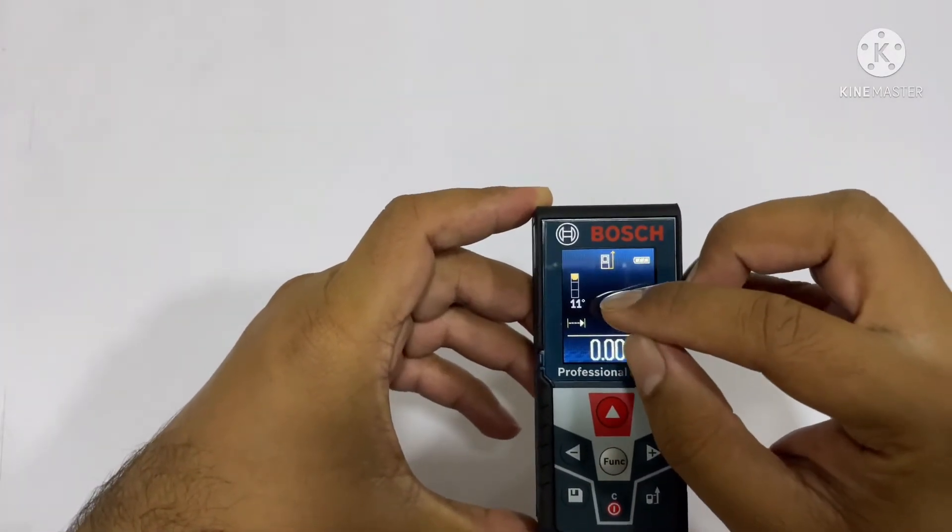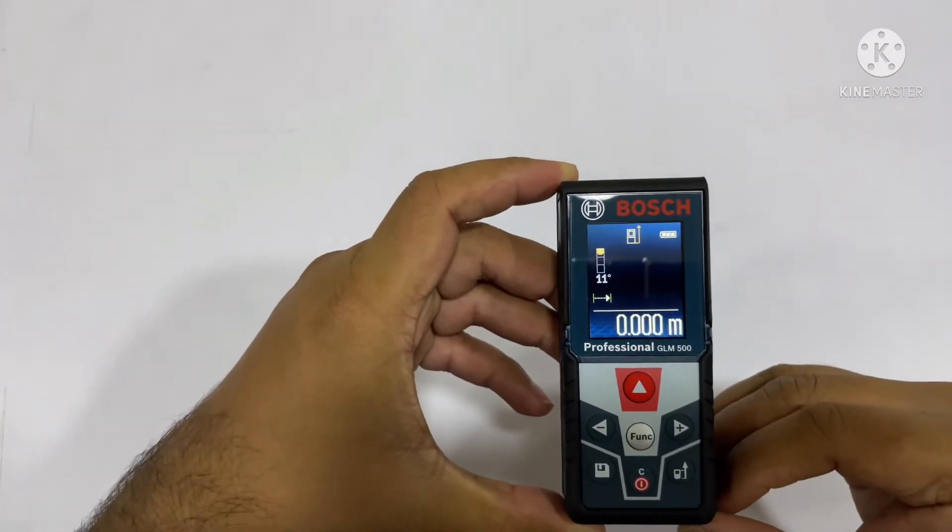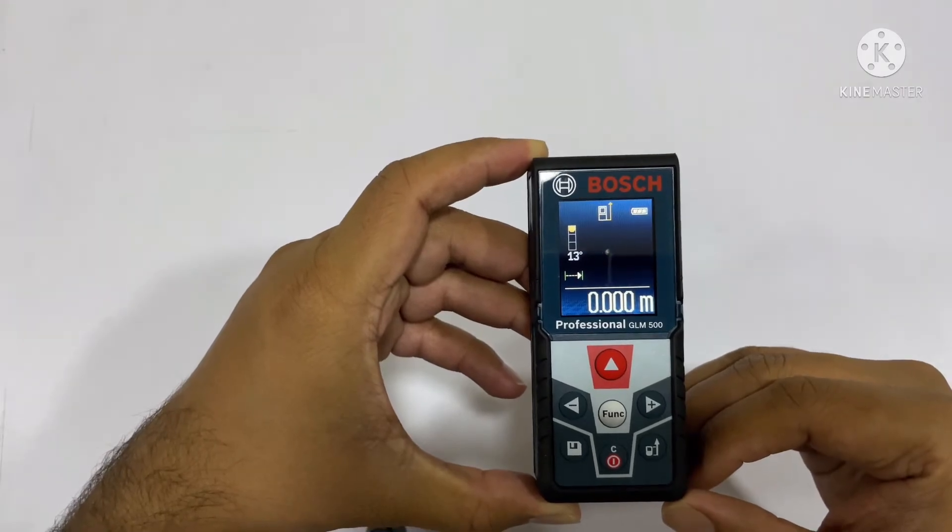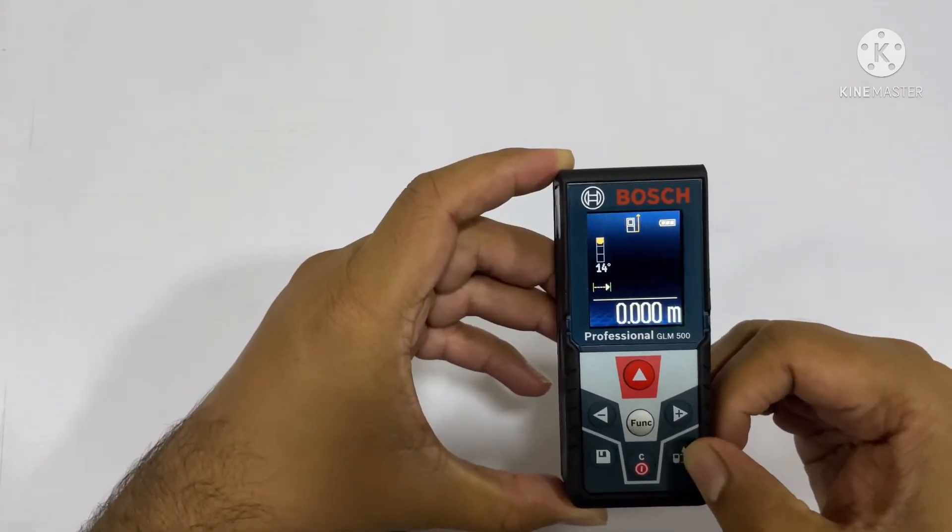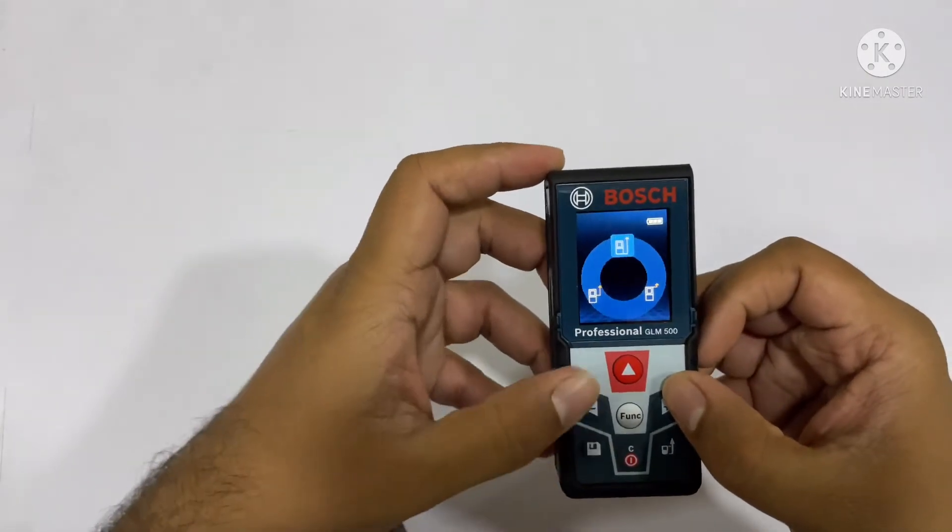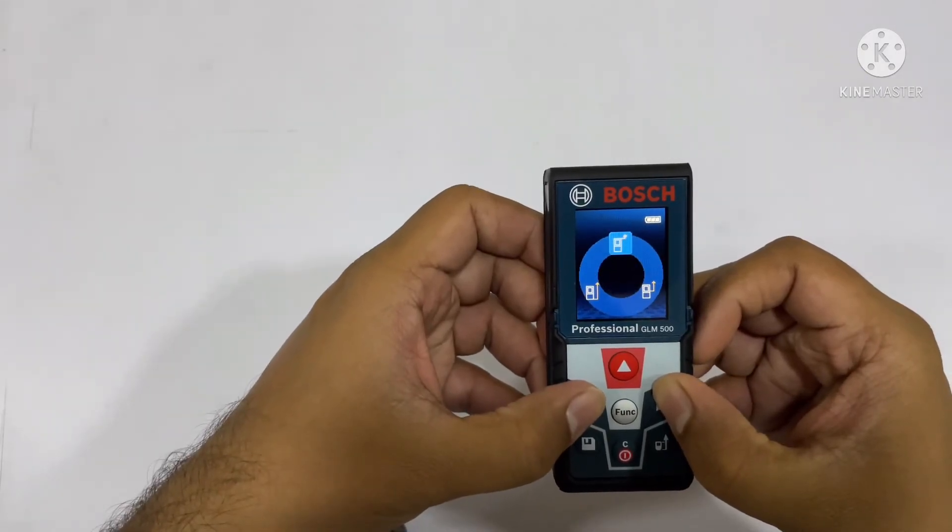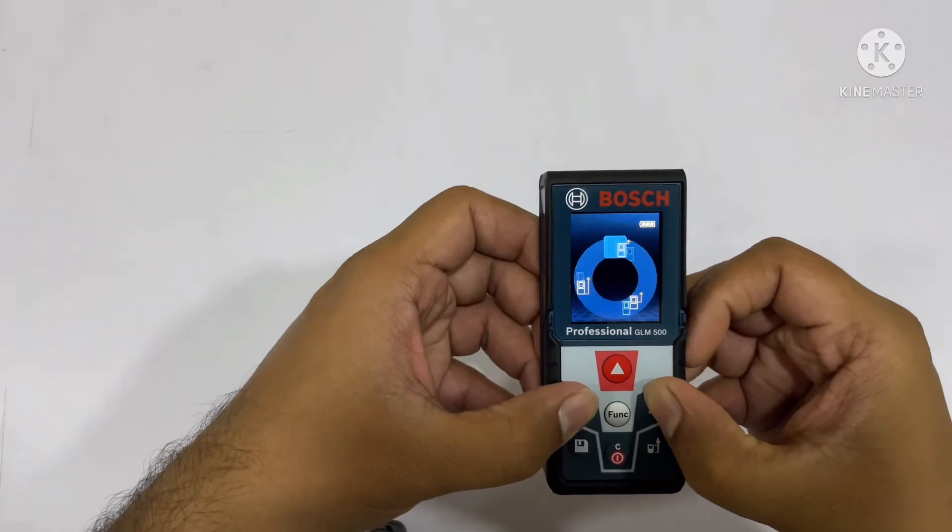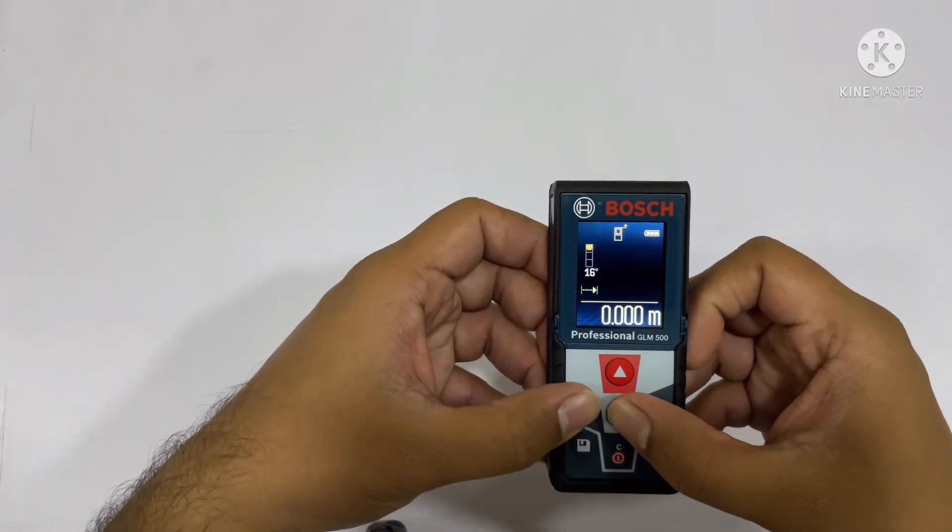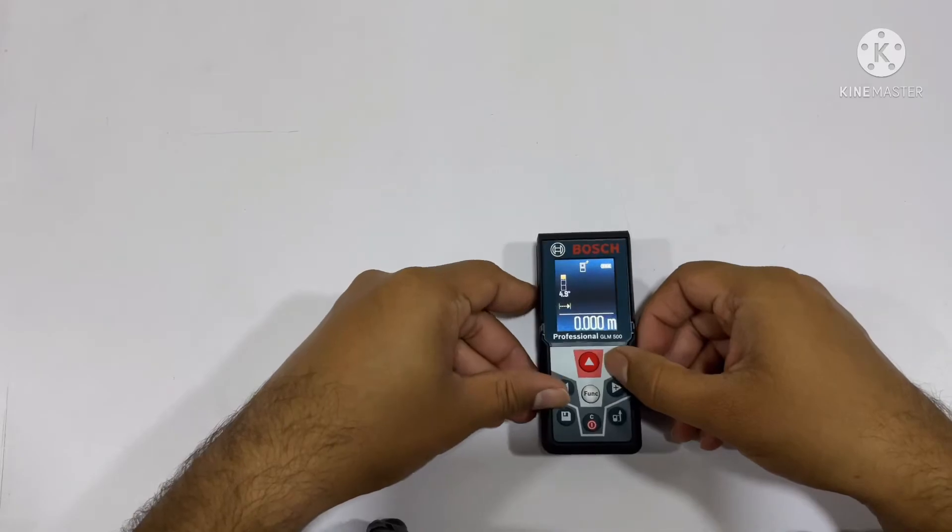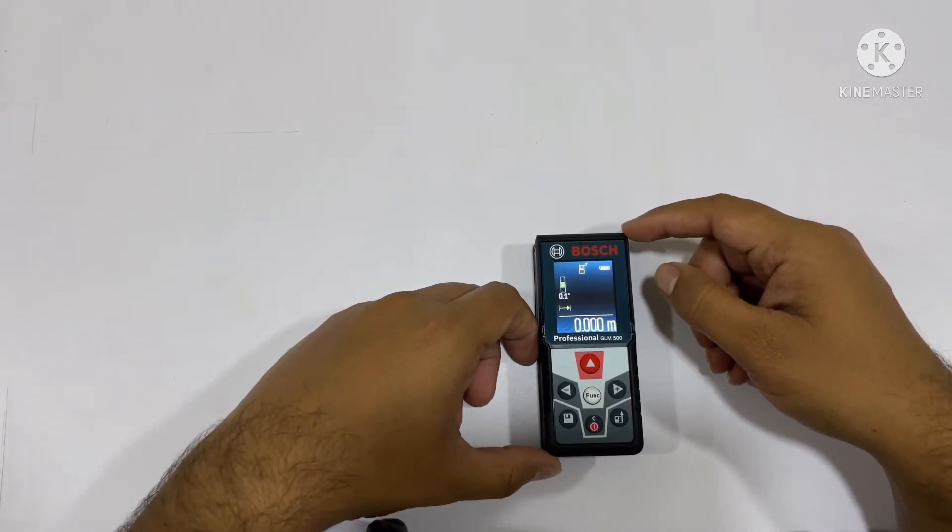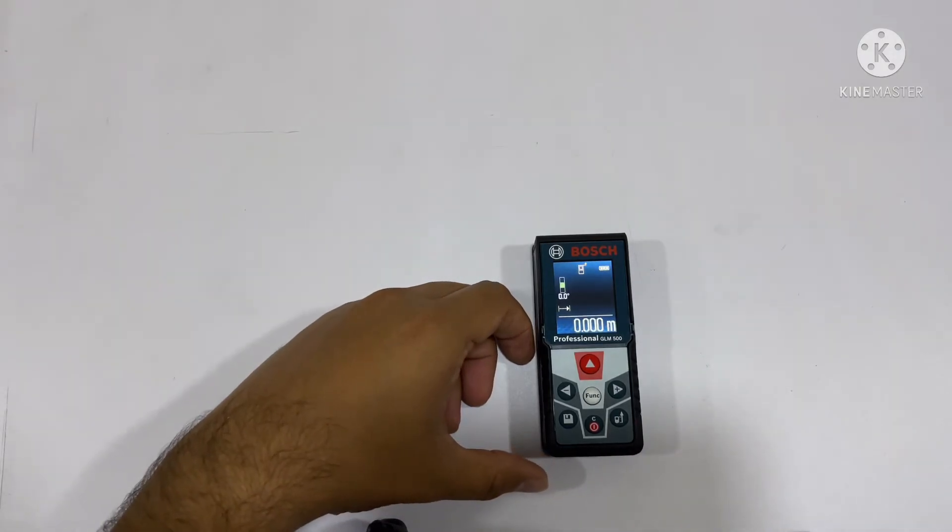This device is measuring the distance from the bottom of this body. If you want to change this position, you need to click this button and change it to different position whatever you want. The starting point can be adjusted by this function. Now if I want to take the distance from this position, the distance will be calculated.